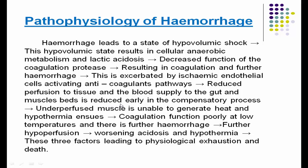Blood supply to the gut and muscles is reduced early in the compensatory process. This underperfused muscle is unable to generate heat, and hypothermia ensues. Coagulation further fails to function properly at low temperatures, leading to further hemorrhage and further hypoperfusion.